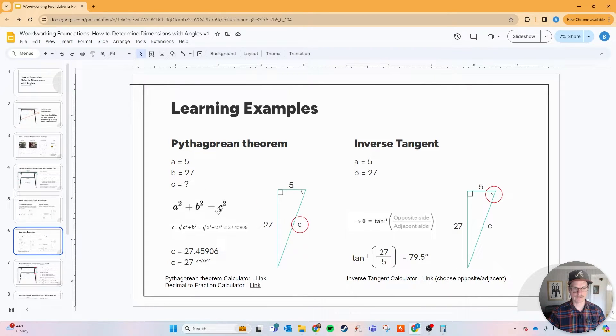Here's an example where we are solving for c. Let's say we have a table leg here, we don't know the angle yet, but we want to know what that length is. We want the table depth to be 27 inches and we want it to be inset 5 inches. What is the length of that leg? This is where we take a squared plus b squared equals c squared, which is the Pythagorean Theorem, and we plug that in. When we do the square root of 5 squared plus 27 squared, we get 27 inches 0.45 or in imperial it's 27 and 29/64ths.